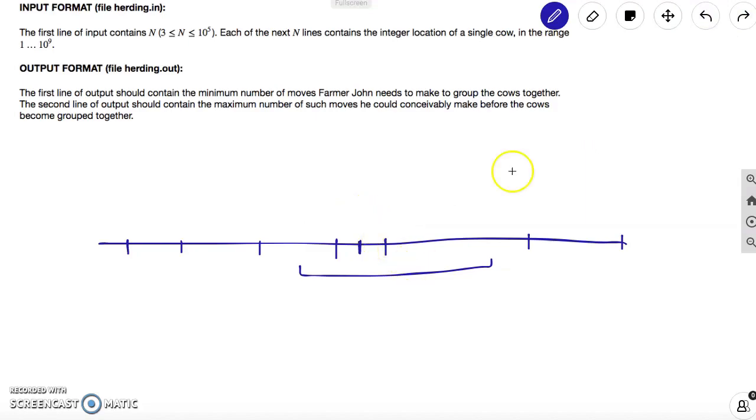For example, if we took this window over here, which has five points inside of it already, all that we have to do is just take three steps to bring all of these guys in.